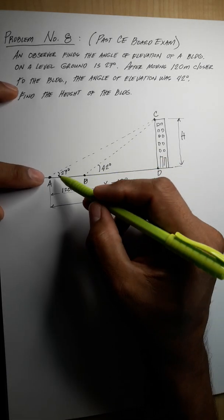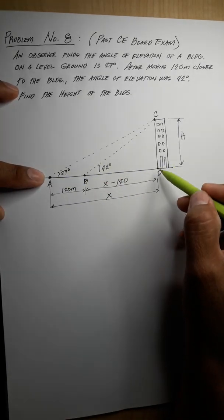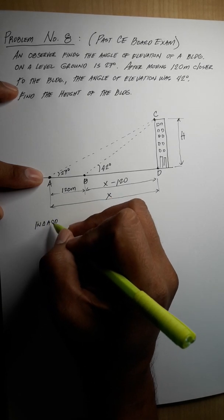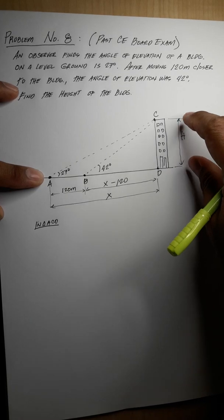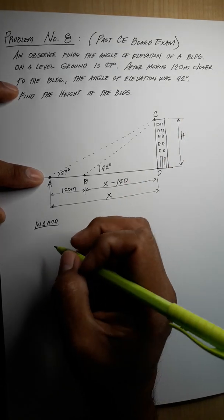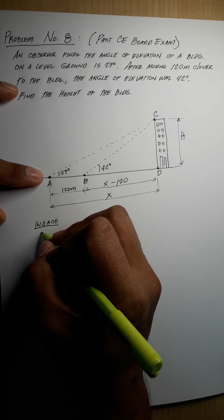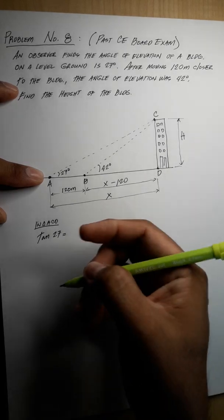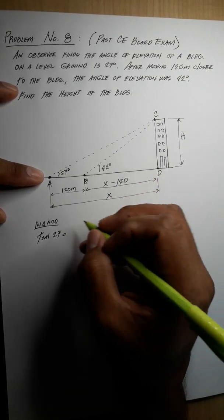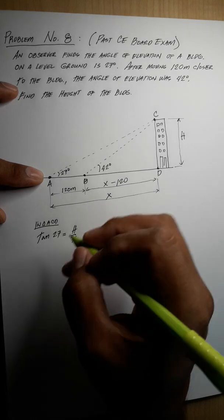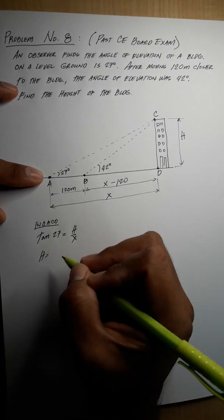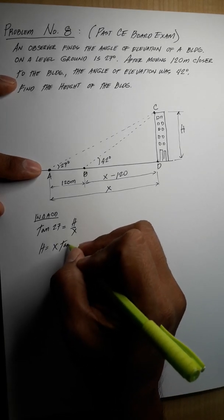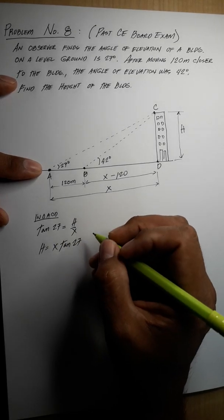In triangle ACD, we solve for h. Tangent 27 equals opposite over adjacent, which is h over x. So h equals x times tangent 27. This will be our equation number one.